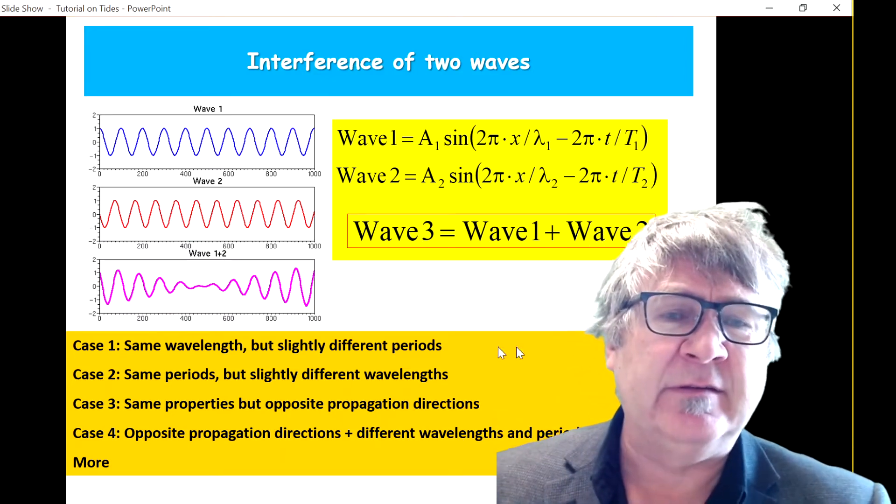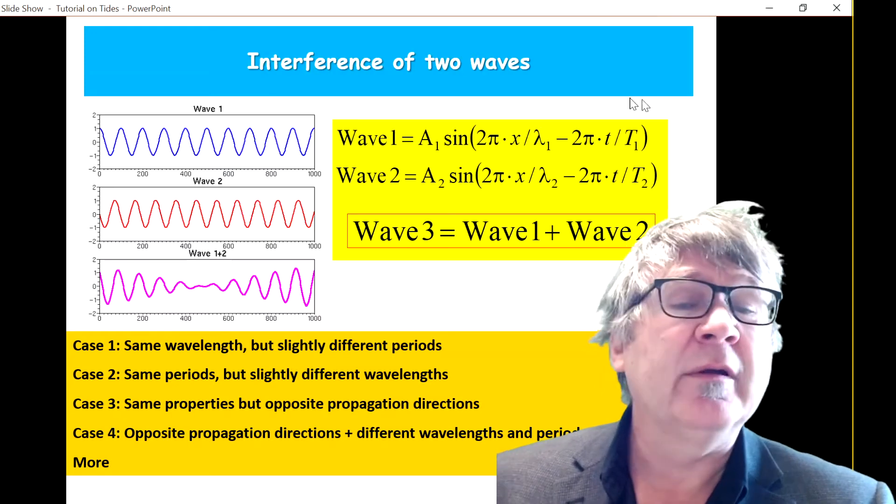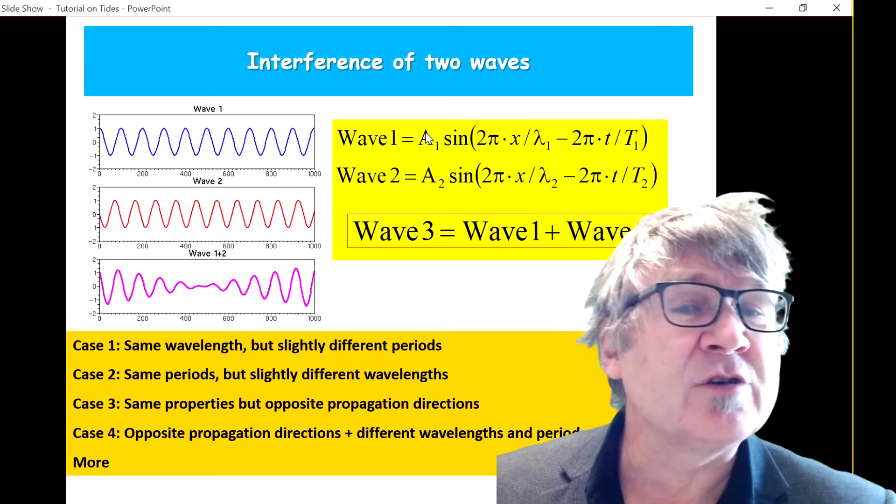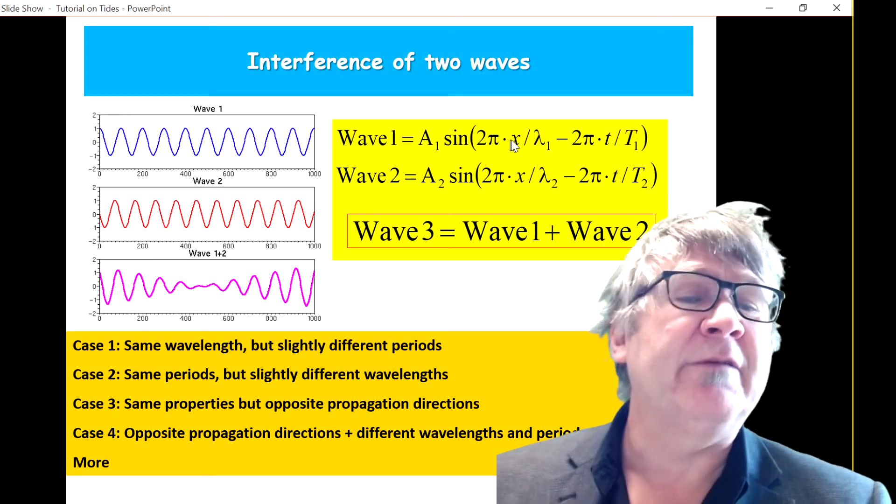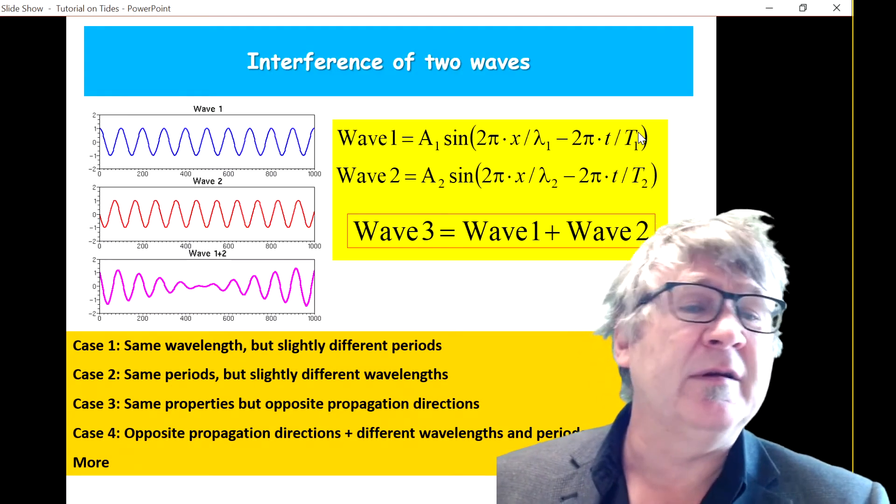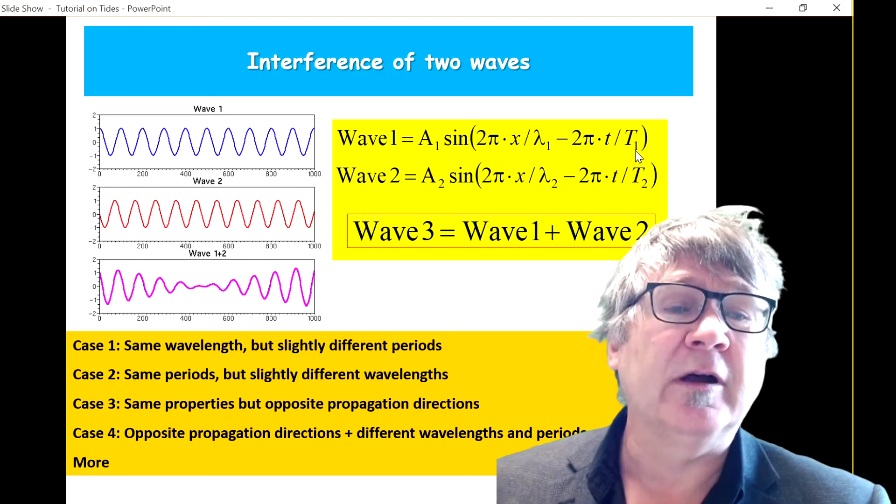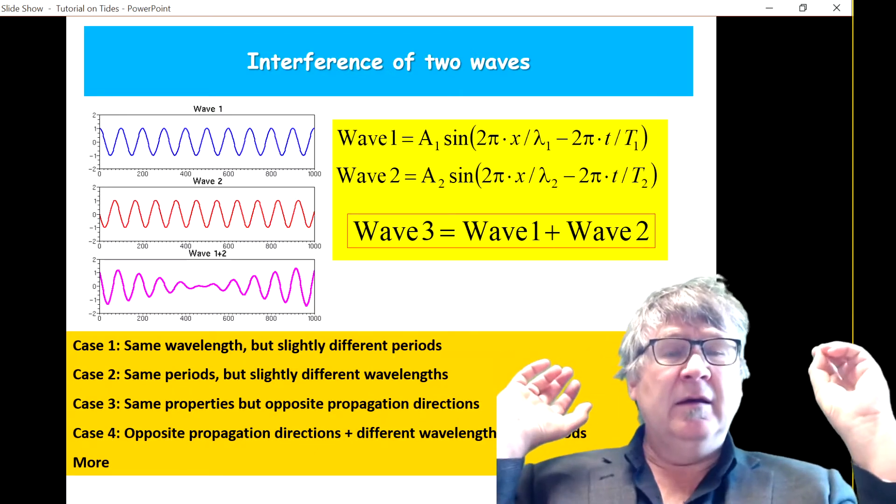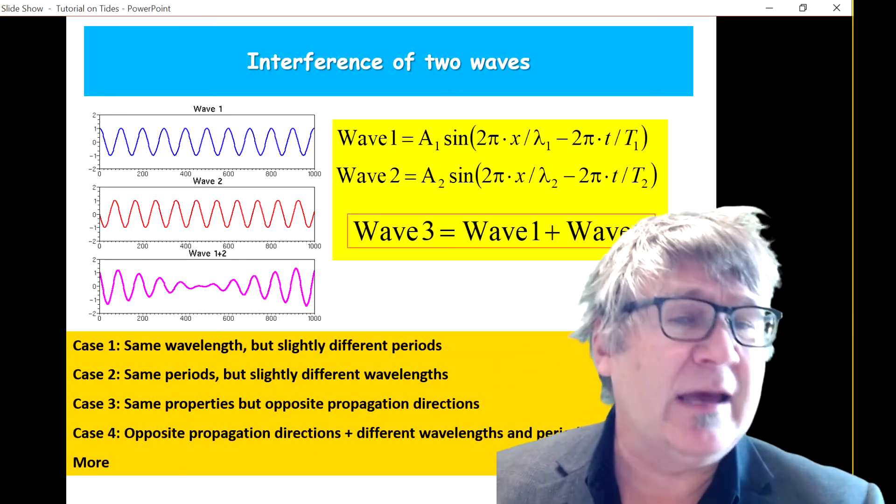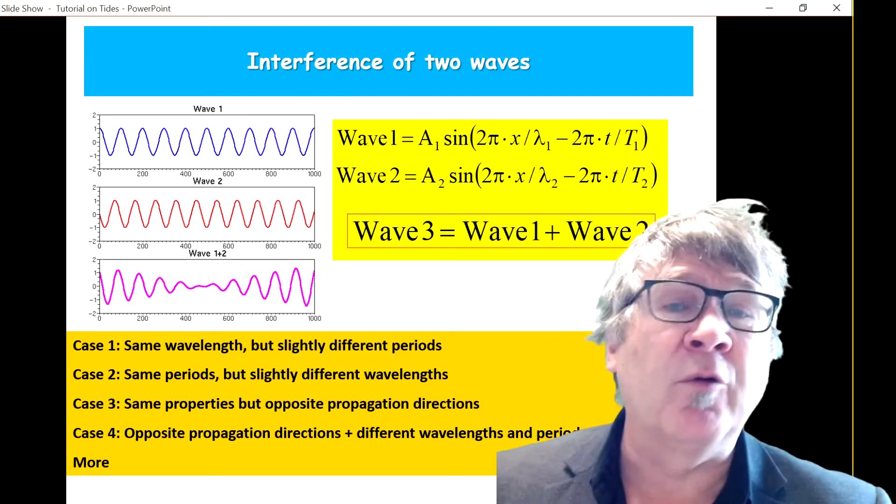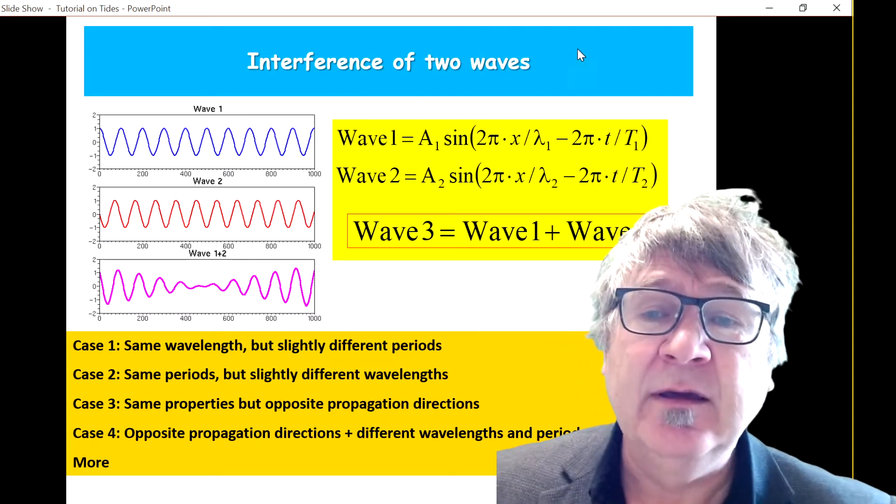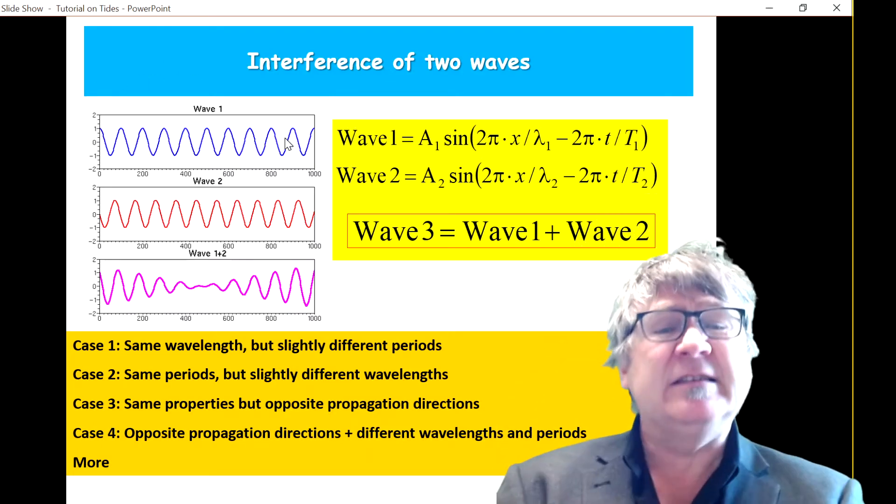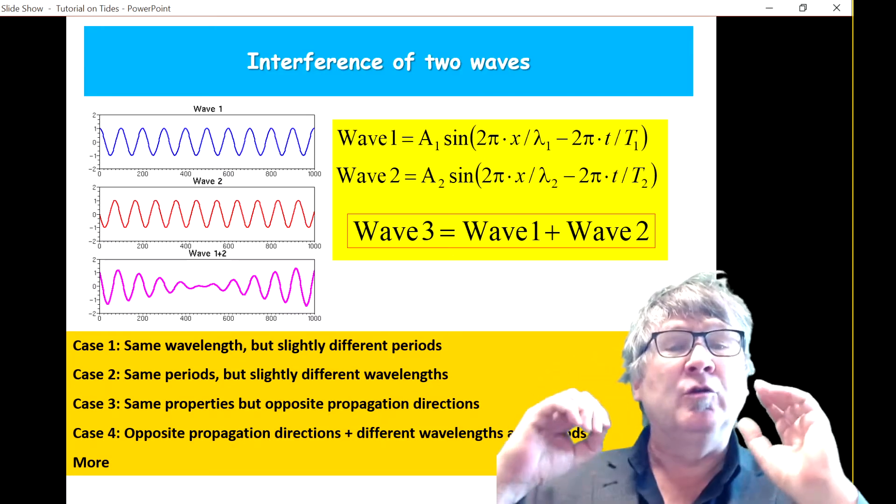You see these two waves written down here. Wave 1 has a certain amplitude, we just call it A1. Has a certain wavelength, we call it lambda 1. Has a certain period, we call it capital T1. We plug it in, we can simulate how the shape moves around in space over time. Here's a snapshot on the upper left.